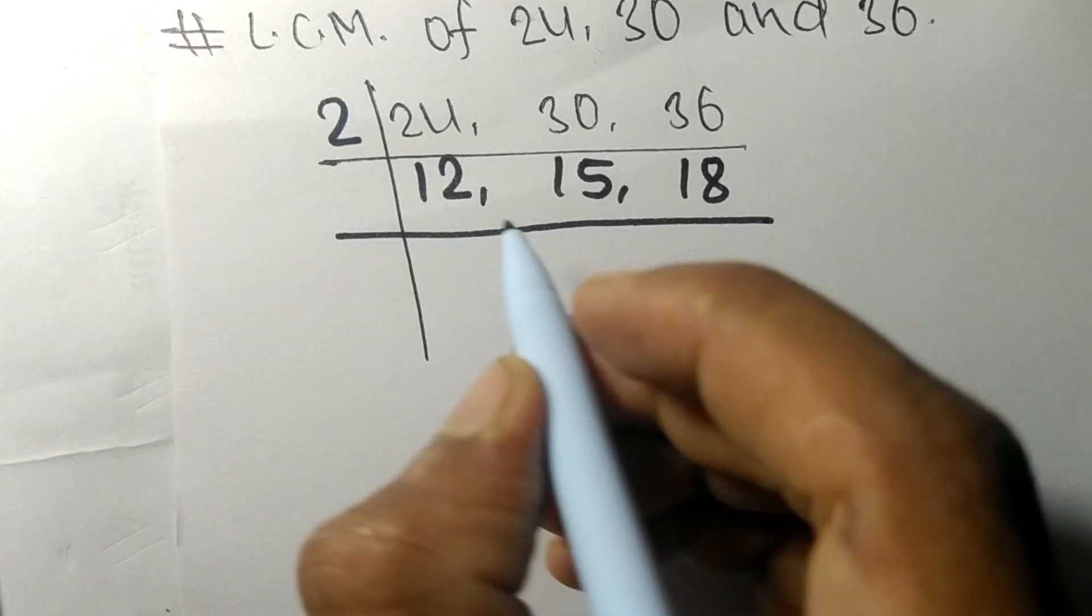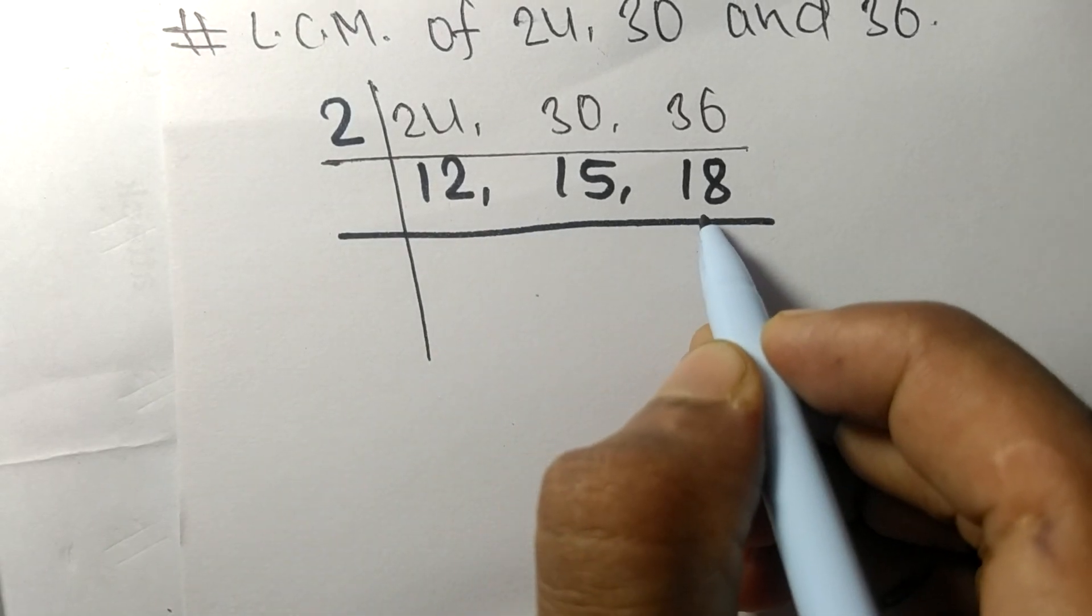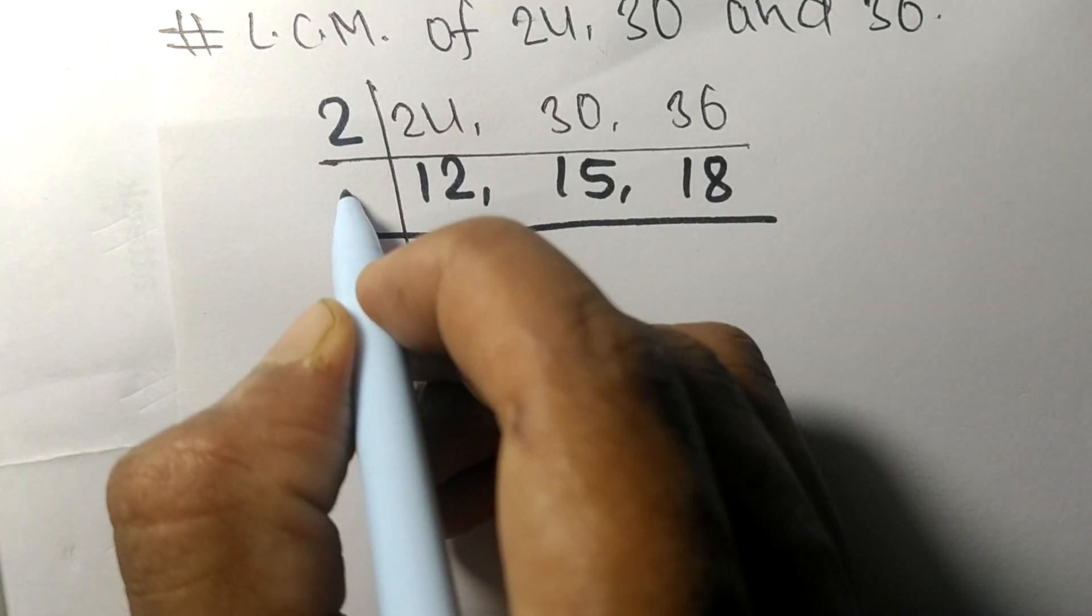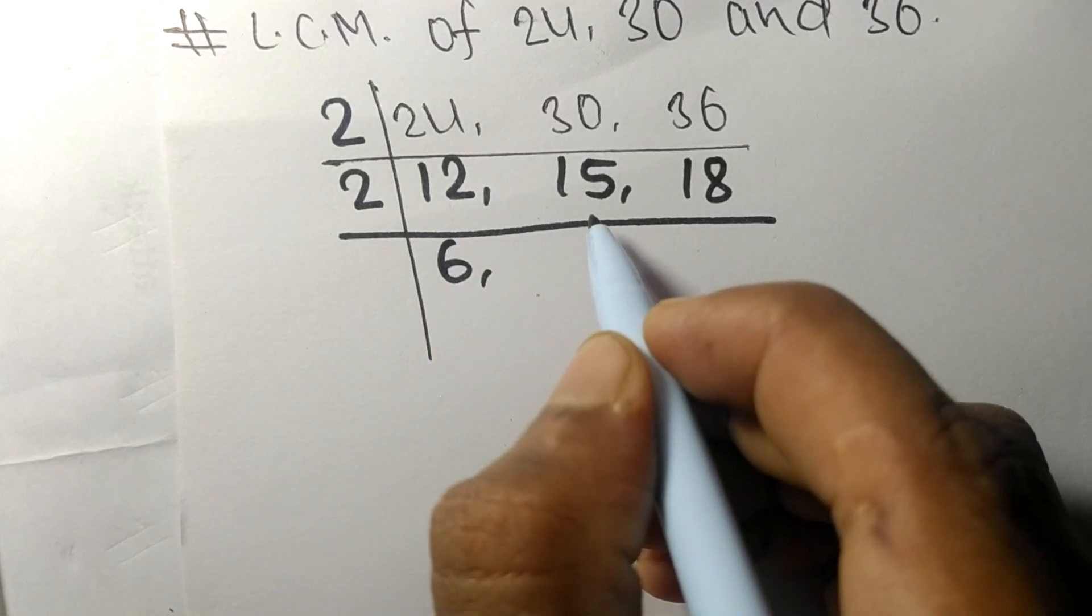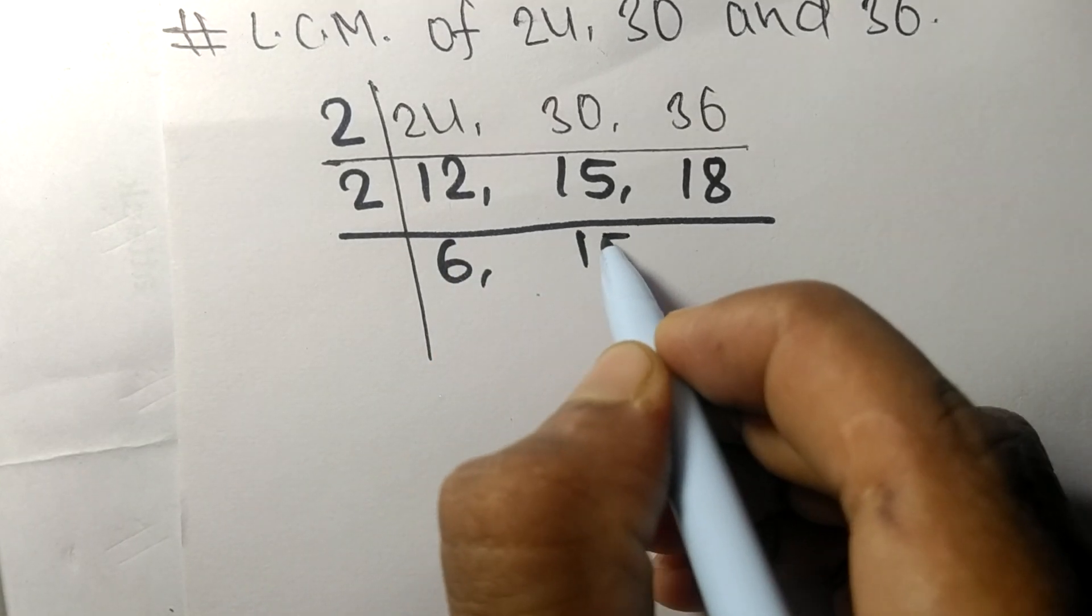Now 12 and 18 are divisible by 2: 2 times 6 means 12. 15 is not divisible, so it stays the same. 2 times 9 means 18.